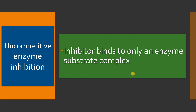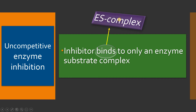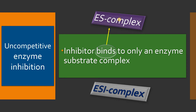Uncompetitive enzyme inhibition means the inhibitor molecule binds only to the enzyme-substrate complex. Unlike competitive and non-competitive enzyme inhibitors, this uncompetitive enzyme inhibitor only binds after formation of the enzyme-substrate complex. That is why it is called uncompetitive — there is no competition between substrate and inhibitor. After the inhibitor binds to the enzyme-substrate complex, it forms an enzyme-substrate-inhibitor complex, which eventually decreases the rate of the enzyme-catalyzed reaction.